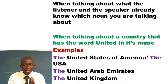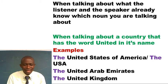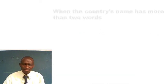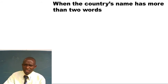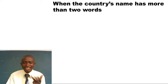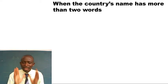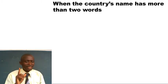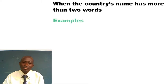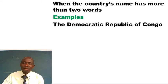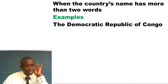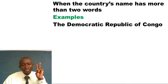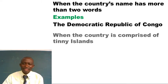We also want to look at other countries — when the country's name has more than two words. Uganda has only one word, Kenya, Rwanda — only one. But if a country's name comes out of more than two words, that name is introduced with article THE. For example: The Democratic Republic of Congo — there are more than two words, so we name such a country with article THE.